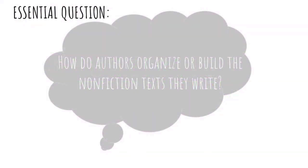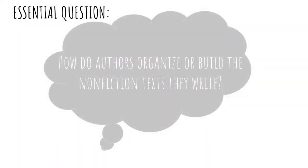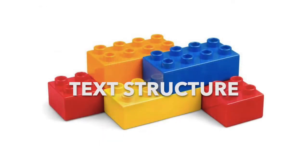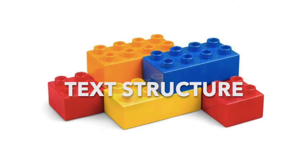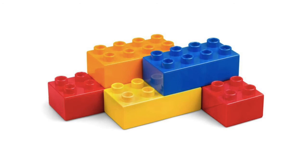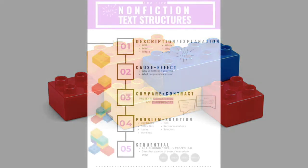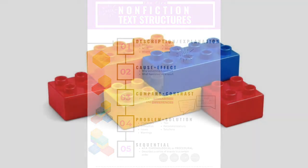So how do authors organize or build the nonfiction texts they write? The way the text is organized is called the text structure. Text structures are the building blocks of nonfiction writing. There are five main text structures, and each one serves its own unique purpose. In order to fully understand and analyze nonfiction texts, active readers need to pay attention to the specific type of text structure being used.